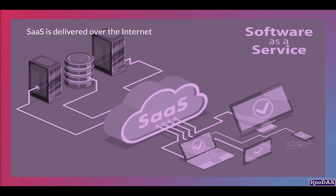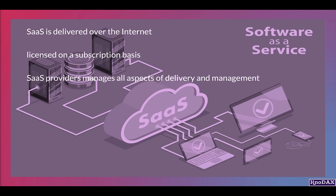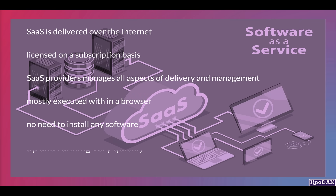To summarize: SaaS is delivered over the internet and is typically licensed on a subscription basis. SaaS providers manage all aspects of delivery and management. SaaS software is executed mostly within a browser, so there is no need to install any software. It can be up and running very quickly as typically no installation is needed on the client side. Since scalability is built into the architecture of SaaS software, it can quickly scale as needed.